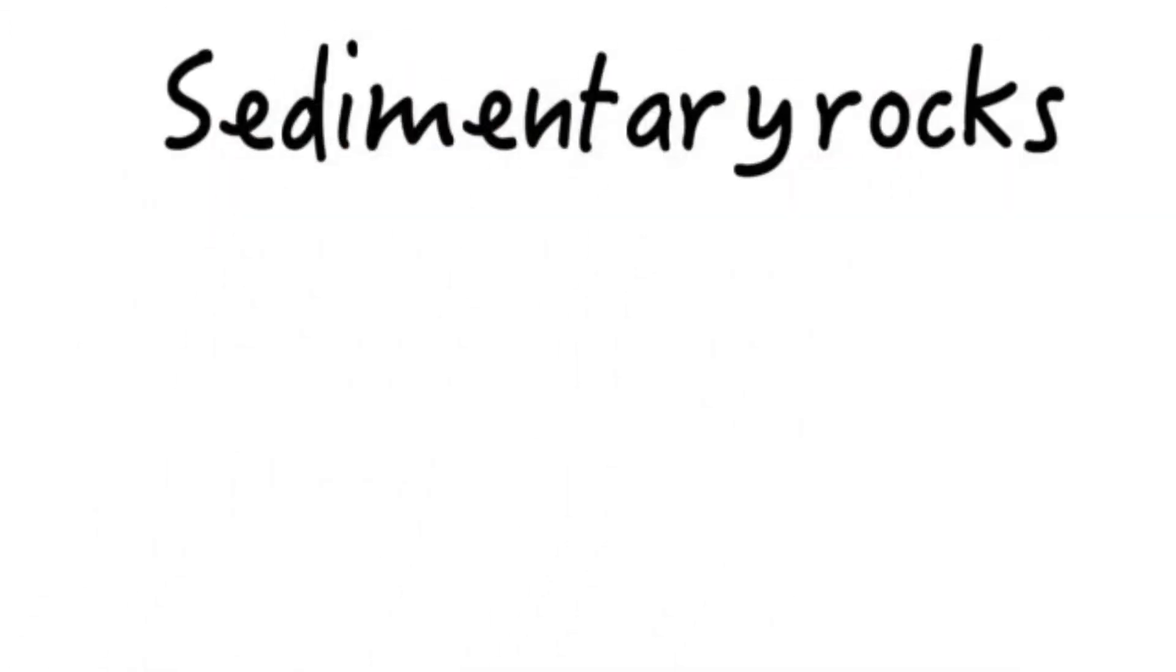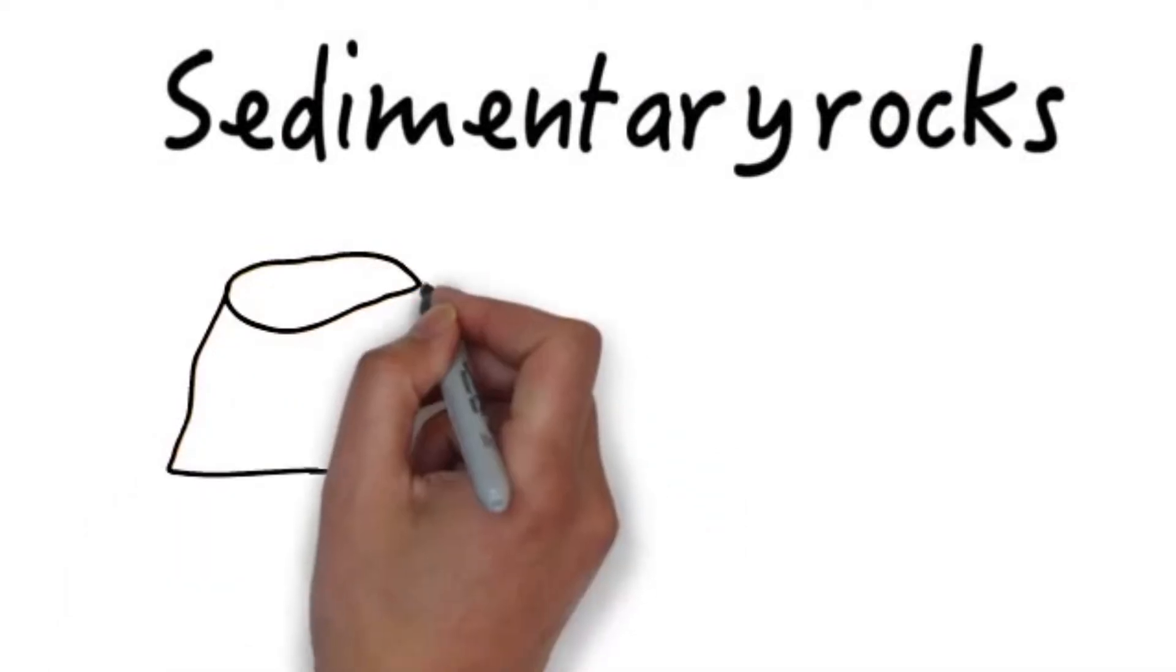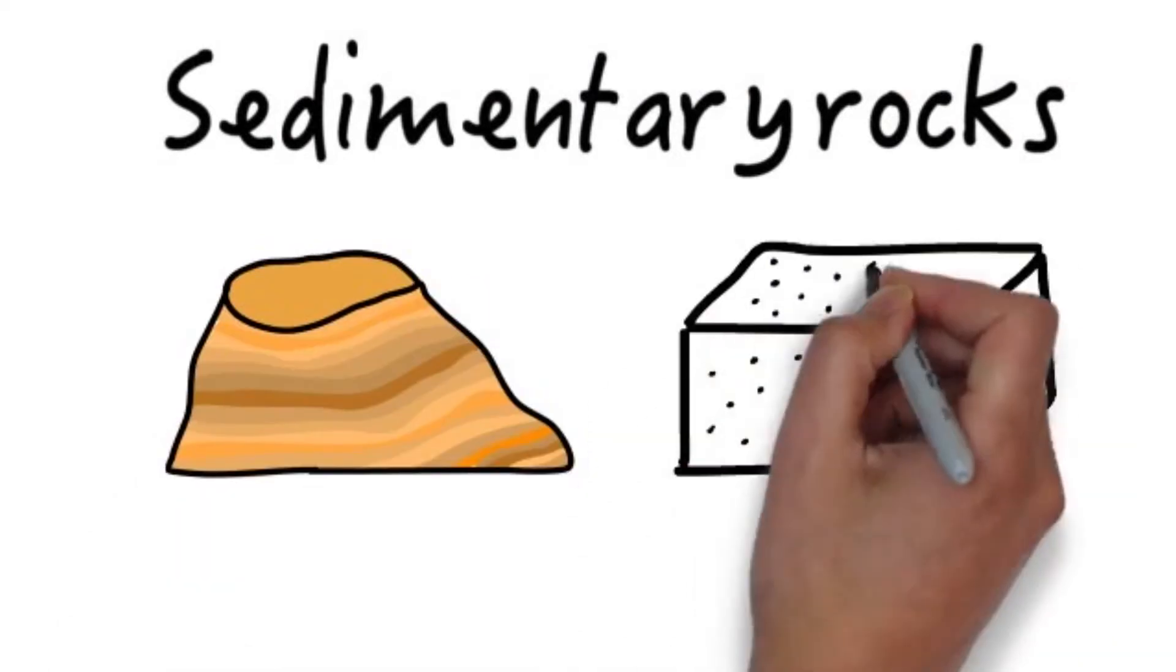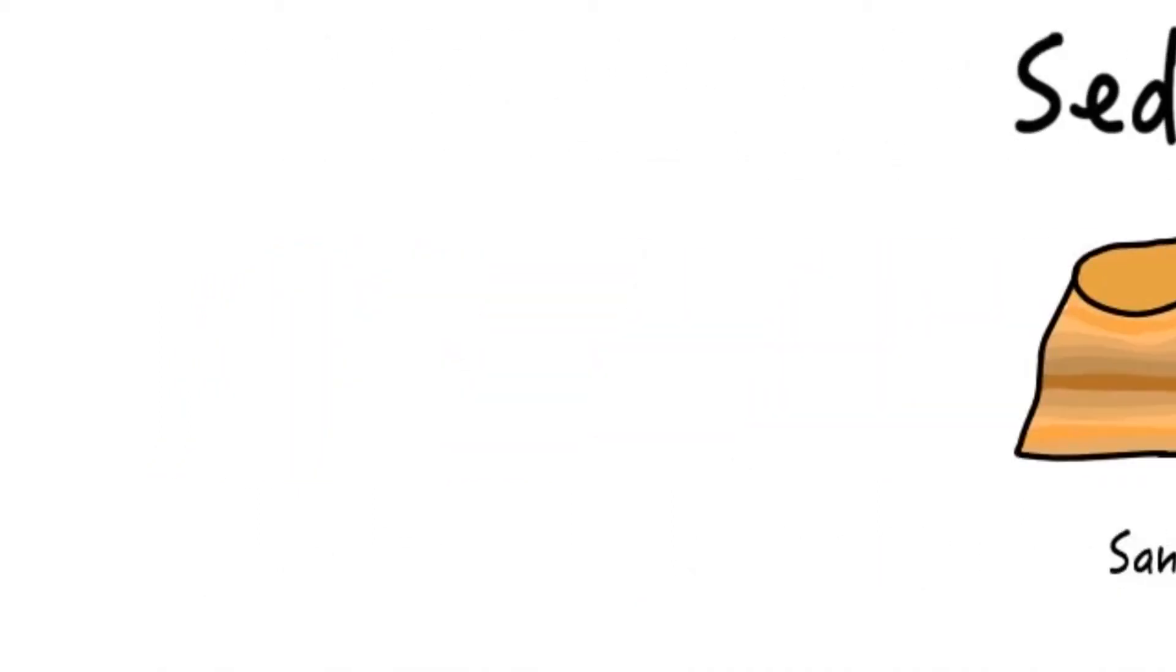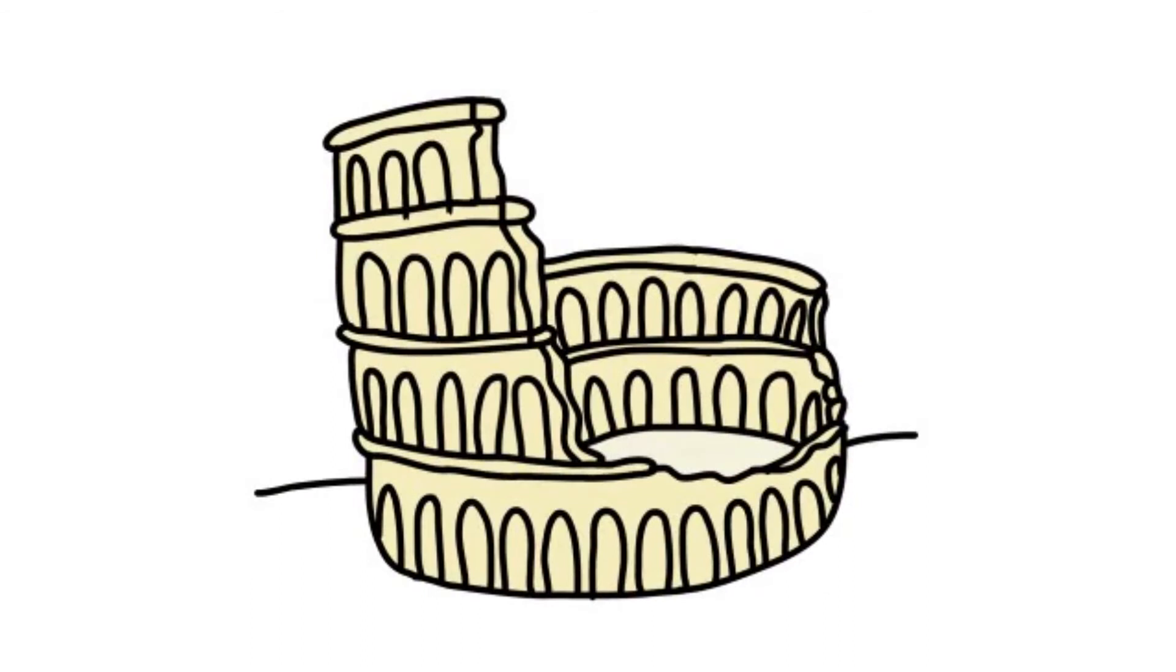Sedimentary rocks are made of sediment, which are tiny pieces of rock that settle at the bottom of water and are slowly hardened over time. Sandstone and limestone are also used in constructions for building bricks.